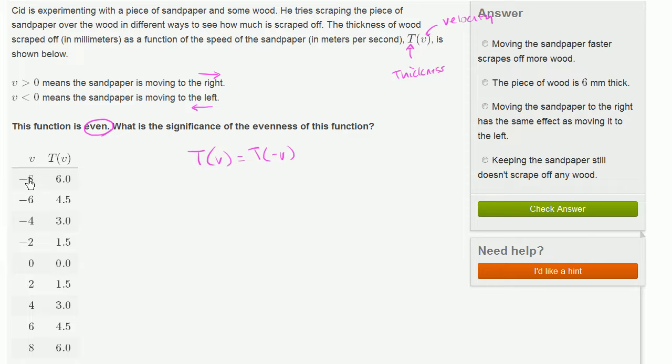So that tells us that if our velocity is 8 meters per second to the left, we're going to get as much scraped off as if we go 8 meters per second to the right. And we see that right over here. So that is equal to that.